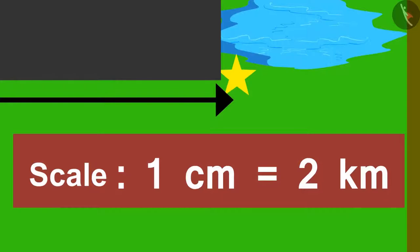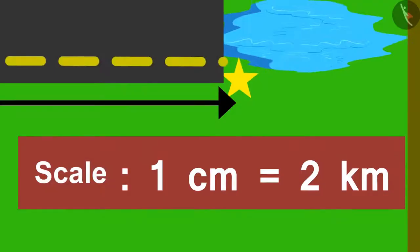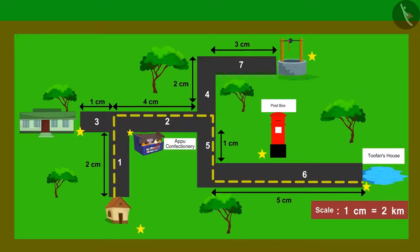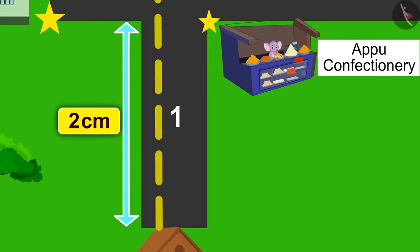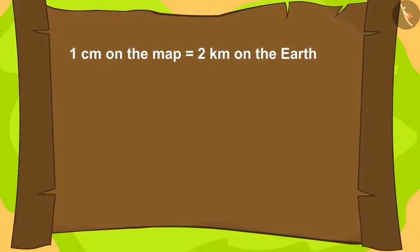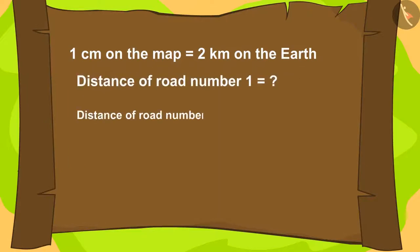Do you know how we can use this scale? The distance of road number 1 on the map given by Uncle is 2 cm. How many km on earth is 1 cm according to scale written on the map? 2 km. What is the distance of road number 1 in this way? 2 times 2 equals 4 km.